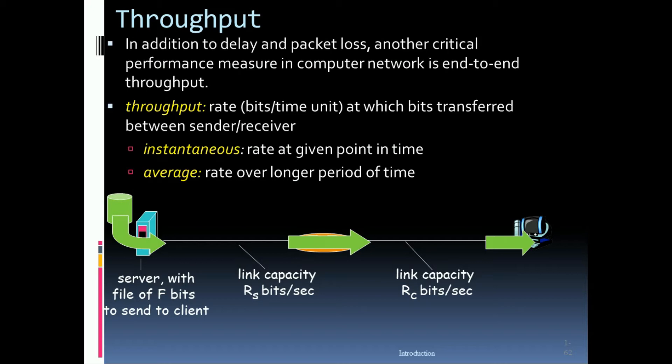So here is an example. Server with file of F bits to send to client and the link capacity is Rs bits per second and here is the router and another link is link capacity Rc bits per second.